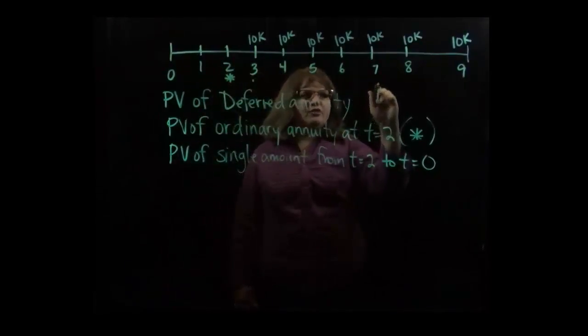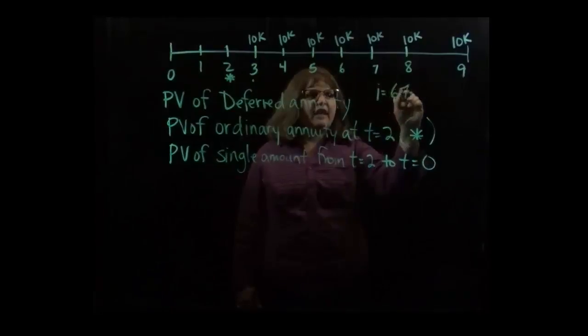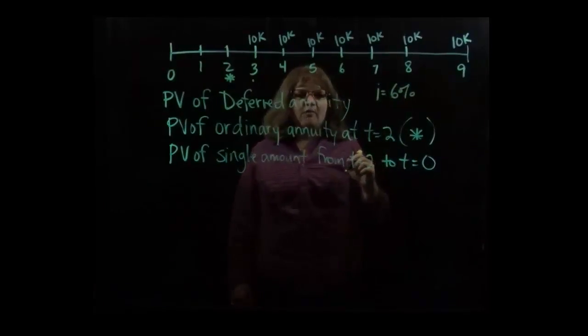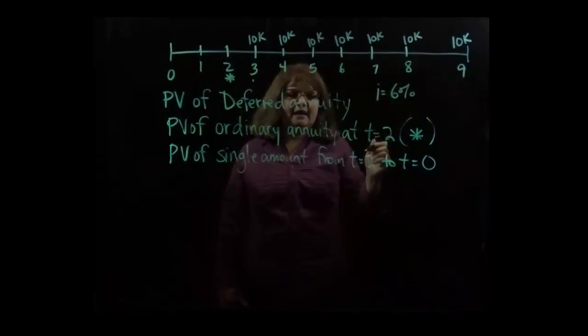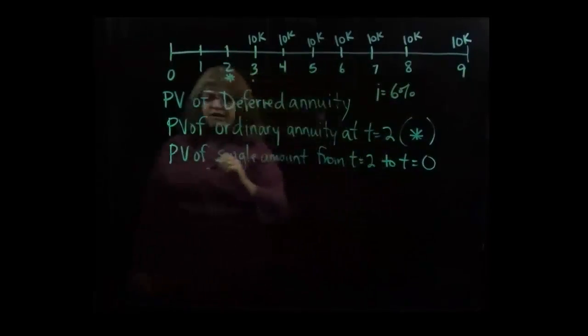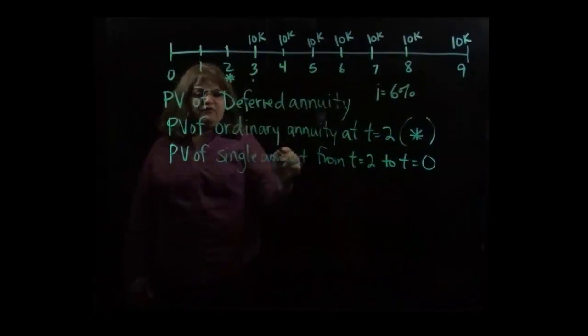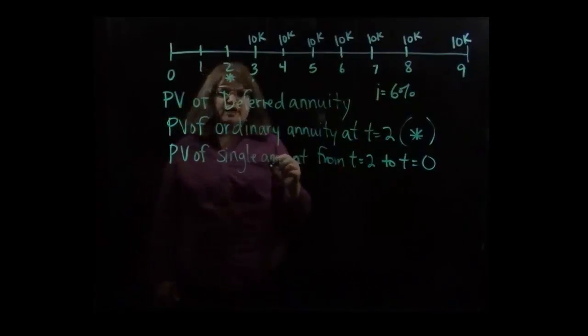Okay, the interest rate in question is six percent. That's an annual interest rate, and we're compounding annually, and so we don't need to convert the annual rate into anything else. And what we need to do is find the present value factors in these two tables. So take a look first at the present value of an ordinary annuity table.